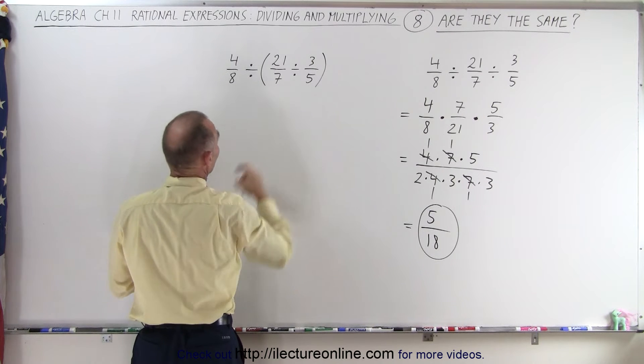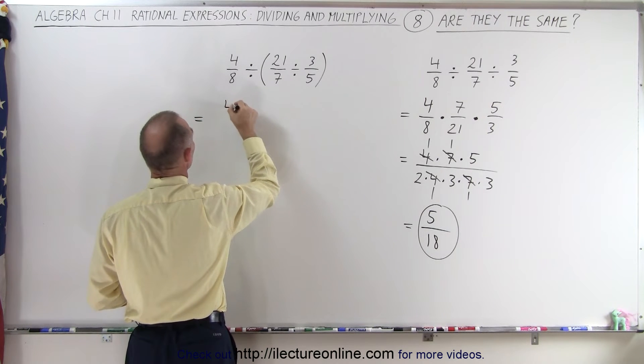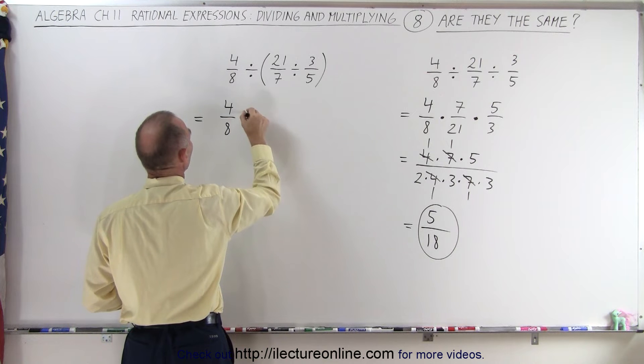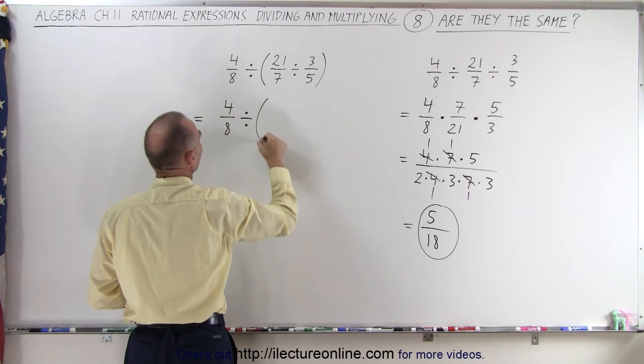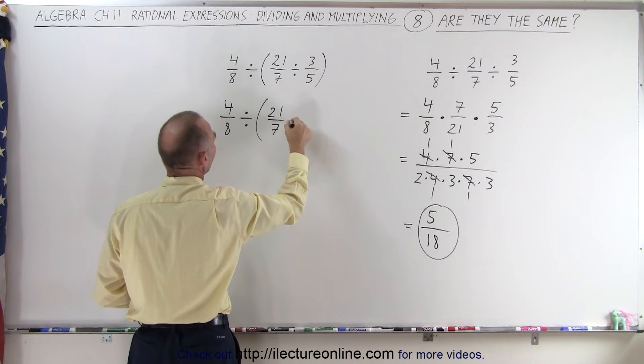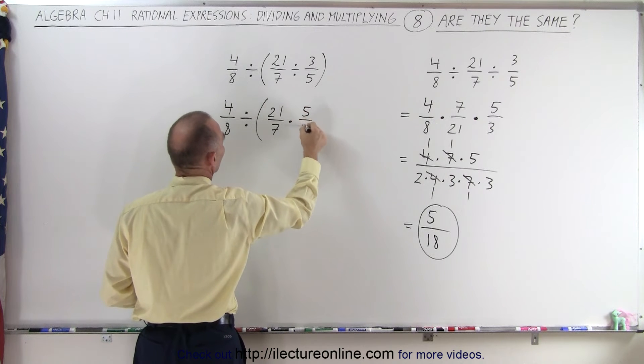So let's go ahead and simplify this portion. This can be written as 4 over 8, divided by, 21 over 7, times 5 over 3.